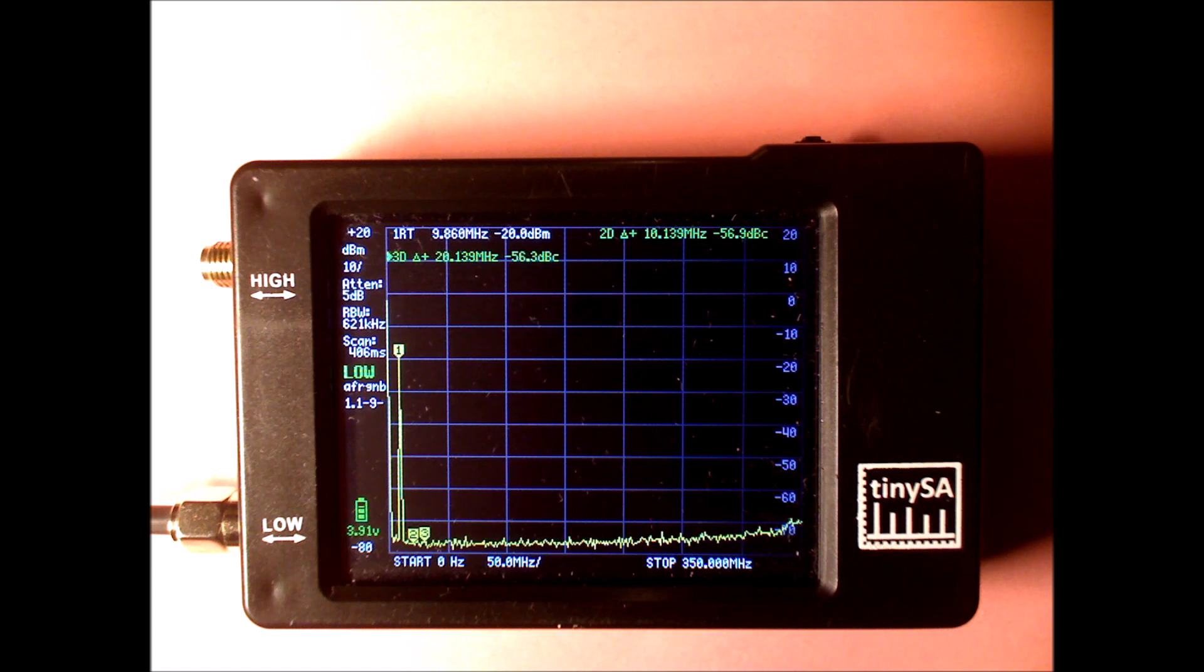So the first thing we're going to do is to increase the signal and see whether the TinySA is capable to deal with stronger signals. Because some people say you should keep your input signal below minus 30 dB, and we're going to see whether that's true.